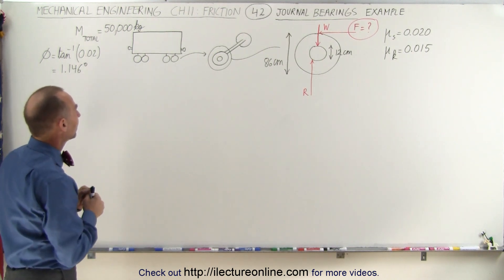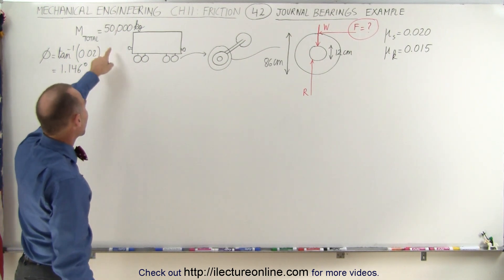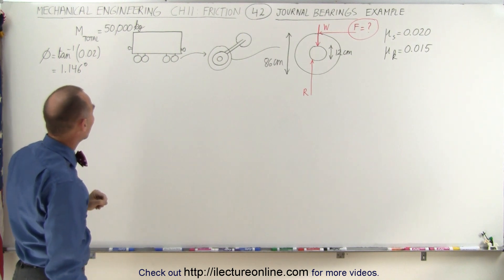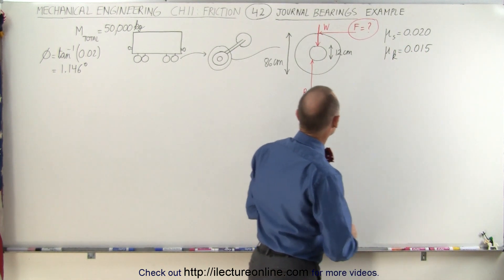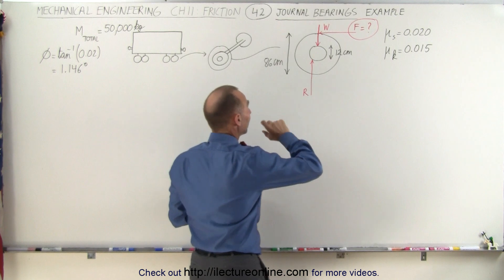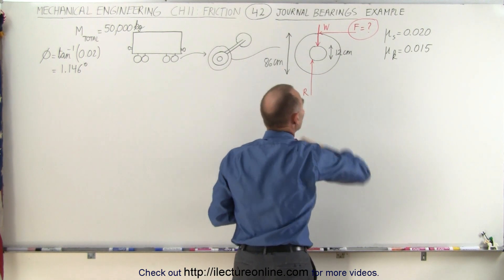Here we have a railroad car that has four axles and eight wheels. The total mass of the car is 50,000 kg and the coefficient of static friction and kinetic friction are illustrated right here. Now obviously there's going to be some friction in the bearing and we're trying to calculate the amount of force required to get the railroad car moving.